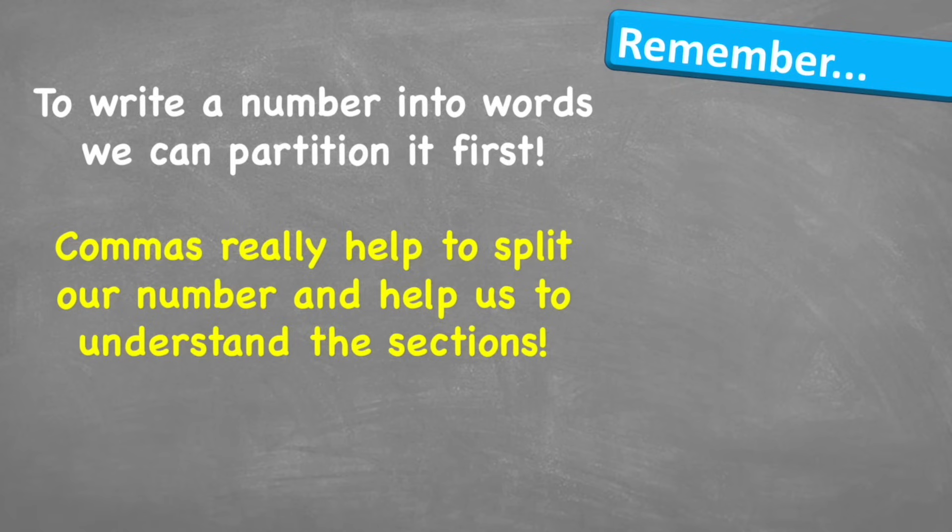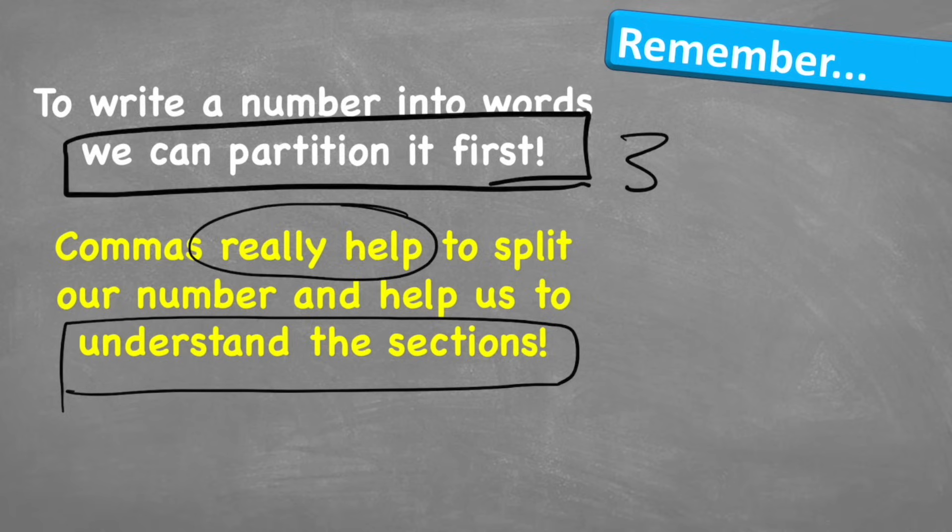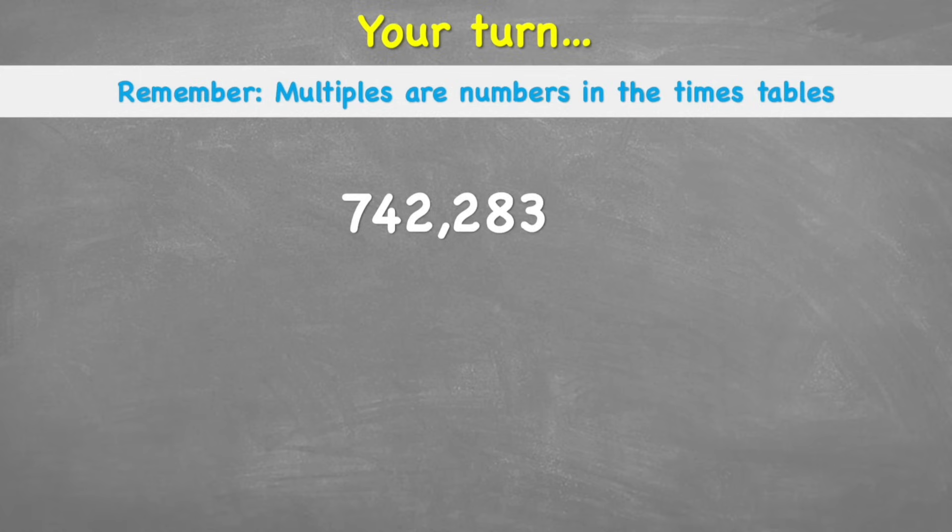Let's look at what to remember. To write a number into words, we can partition it or group it first into sets of 3. Commas can really help you to split the number and help us to understand the sections or the different groups. So your turn. Have a go at writing this number here into words. First, think about where you're going to find your groups. There's a big clue here because we have the comma. And write your answer in the comment section. I'm going to try and mark every single one. Press pause on the video now. Good luck.